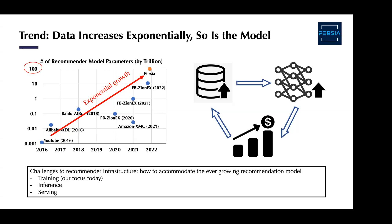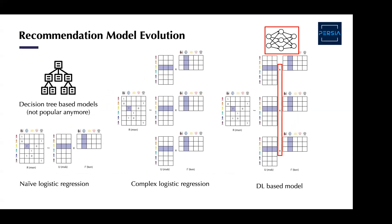Since model size is increasing exponentially, the challenges for recommendation system infrastructure are how to accommodate ever-growing models. Basically we have three challenges: training, inference, and serving. Today I'm going to mainly focus on the training part — how to design a scalable training engine to meet the ever-growing model size. Before going deep, I'd like to give a brief review of the recommendation model evolution.